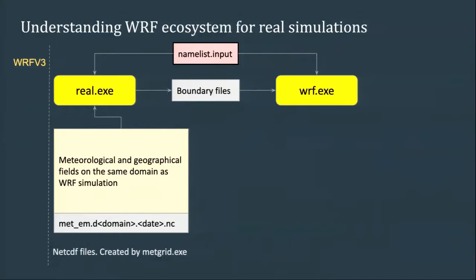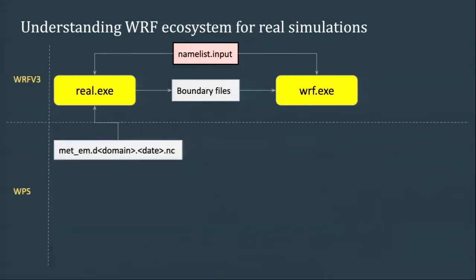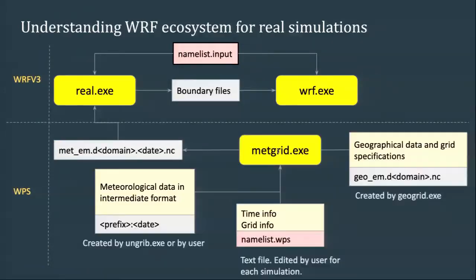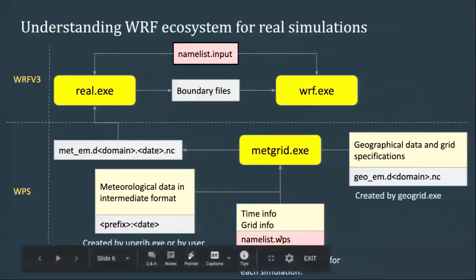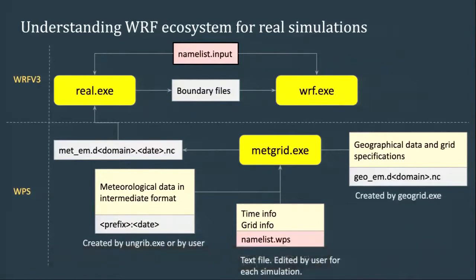To get those met_em files, that's where you need WPS. met_em is the last output from WPS and is created with metgrid.exe. Metgrid needs a namelist file, which is different from the namelist for WRF.exe, but both files need some grid information that must be coherent between them. WRF does not help you make it coherent — it's your responsibility. WRF will crash if they're not coherent, so you have to check that what you put in both files agrees.